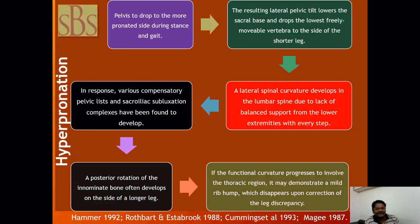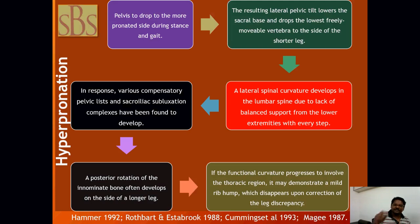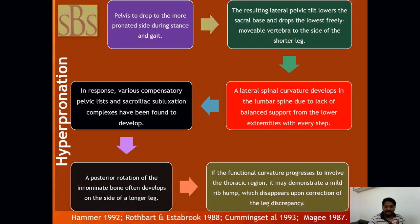Various compensatory pelvic lists develop, and subluxation complexes have been found with a posterior rotation of the innominate bone often developing on the longer side. If the functional curvature progresses to involve the thoracic region, it may demonstrate a mild rib hump which disappears upon correction of the related discrepancy. My first case patient is demonstrating all of these features — posterior rotation of the innominate, hip joint held in flexion, resulting in knee joint flexion to avoid pain, and a rib hump over the thoracic area.